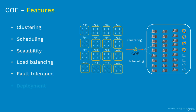If the container orchestration engine finds that a worker node is not responding, it reprovisions containers from the failed node to a healthy node. The last feature is deployment. Container orchestration engines offer different deployment methods — for example, if you have version 1 of an application in production and need to upgrade to version 2, you can choose to completely remove v1 and deploy v2 (recreate, with downtime) or use rolling update or canary methods that slowly replace v1 with v2 without downtime.